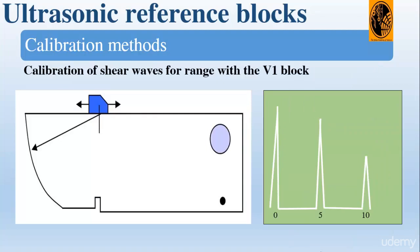Now we'll see the calibration of shear waves for range using the V1 block. By range in angle probe testing, we mean the distance a reflector is from the probe index. It is possible on some flaw detectors to calibrate the time base to 100 millimeter range from the V1 block; however, this involves the scale expansion setting, and not all equipment can do this. So we will confine ourselves to calibrating for 200 mm screen width.